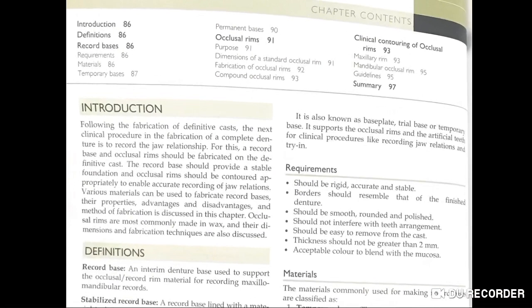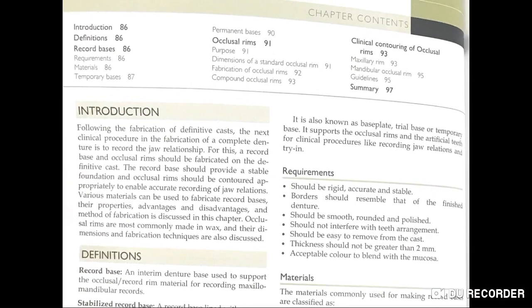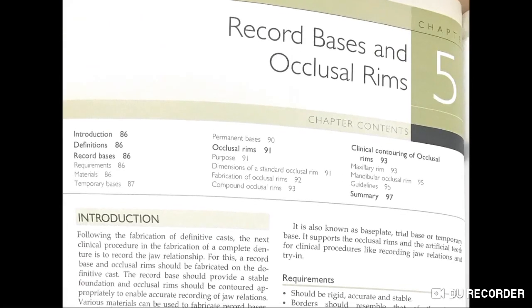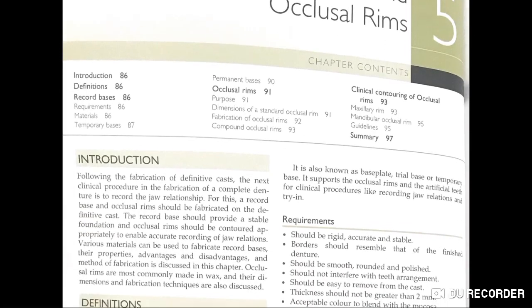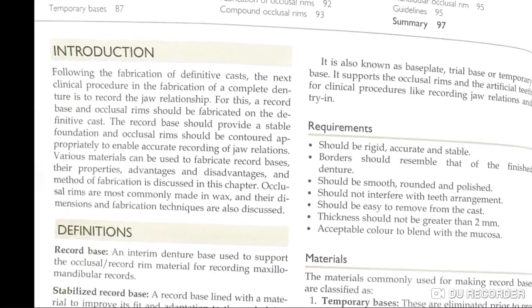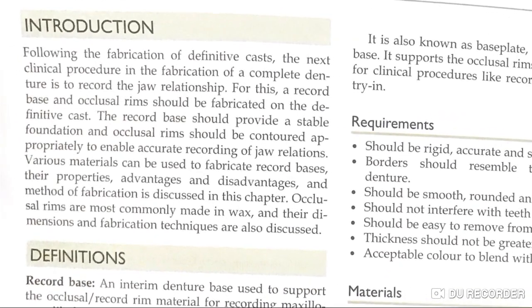Last, we studied fabrication of definitive cast. When our fabrication is done, we will learn how to record the relationship. In this chapter, we will learn how to record the relationship. For this record, we need a record base.